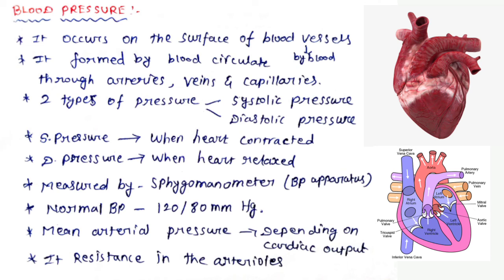The diastolic pressure is formed in the relaxed state of the heart. Mean arterial pressure depends on cardiac output and resistance in the arterioles.